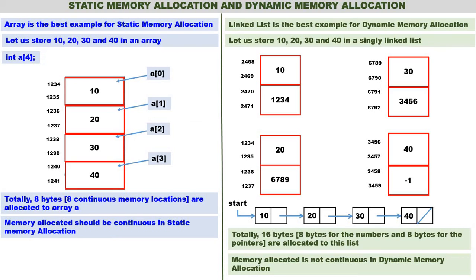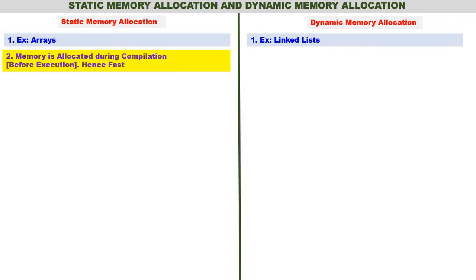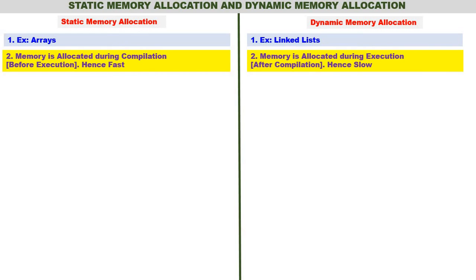Although we draw the linked list linearly, physically the memory locations are not continuous. Now let us compare static and dynamic memory allocation. In static memory allocation, memory is allocated during compilation — before execution — so the program executes fast since memory is already allocated before execution begins.